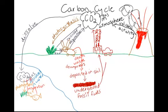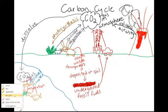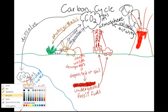We burn fossil fuels in our car — gasoline is a fossil fuel. We burn coal to make electricity. That's going to put carbon dioxide back into our atmosphere. I'm going to label this: burning fossil fuels. Burning fossil fuels puts carbon back into the atmosphere as carbon dioxide. So we have a couple of ways that carbon can get into our atmosphere: volcanic activity, burning fossil fuels, and respiration from organisms on the planet.